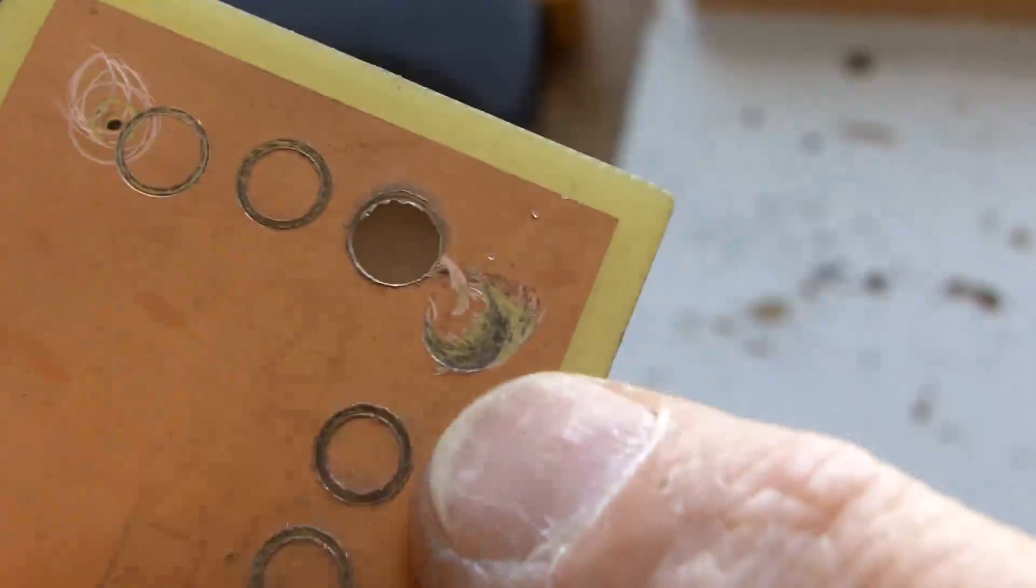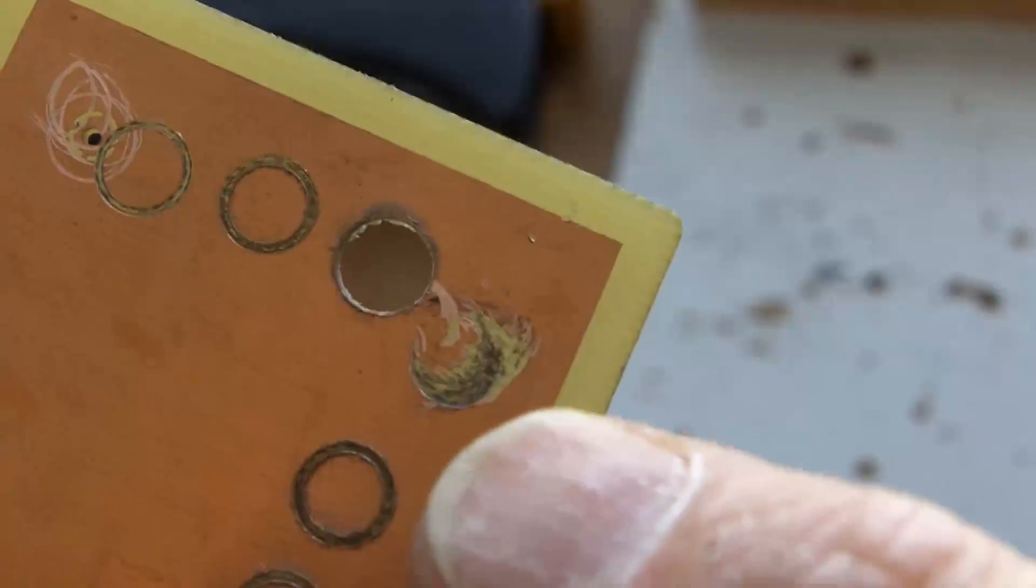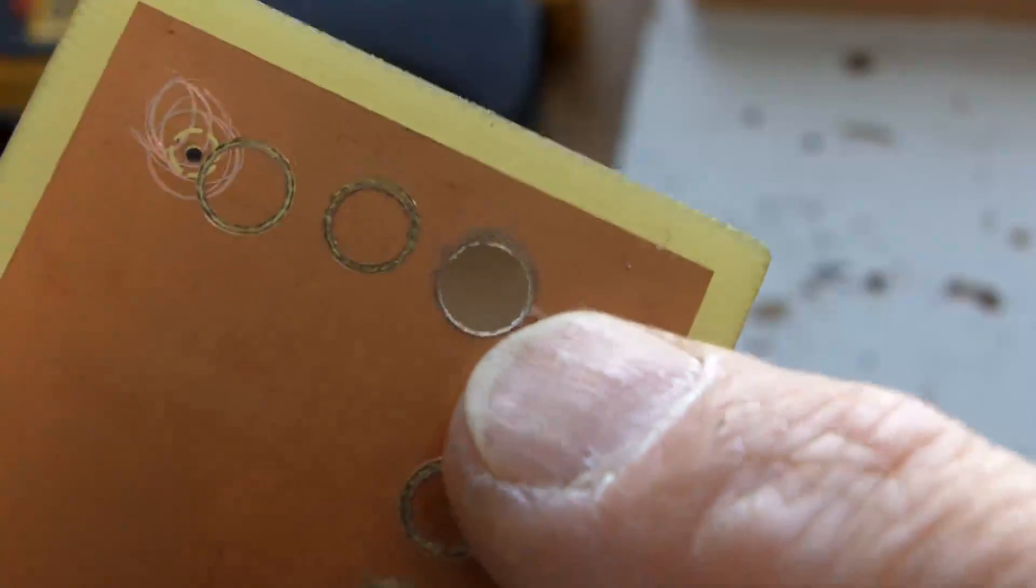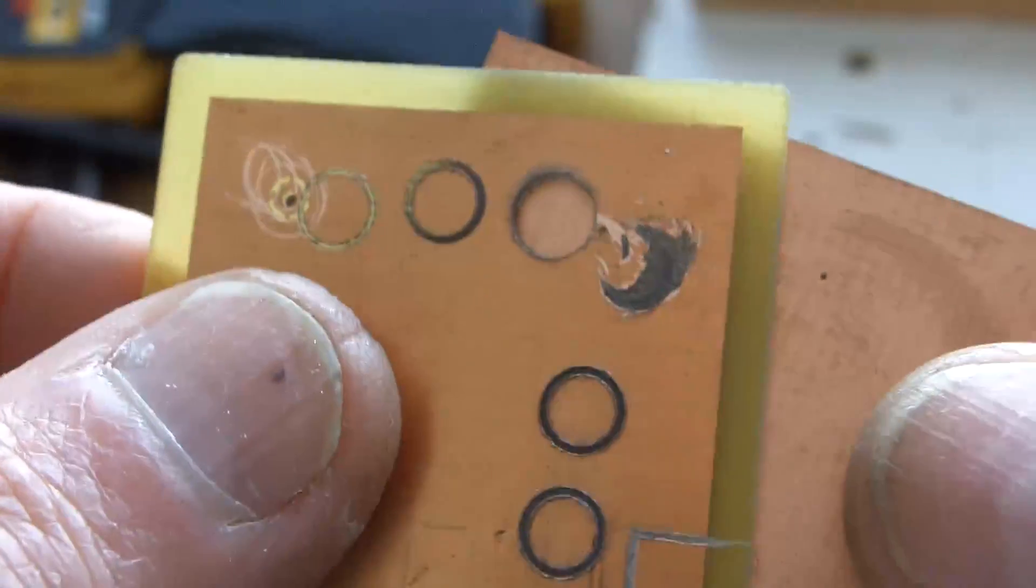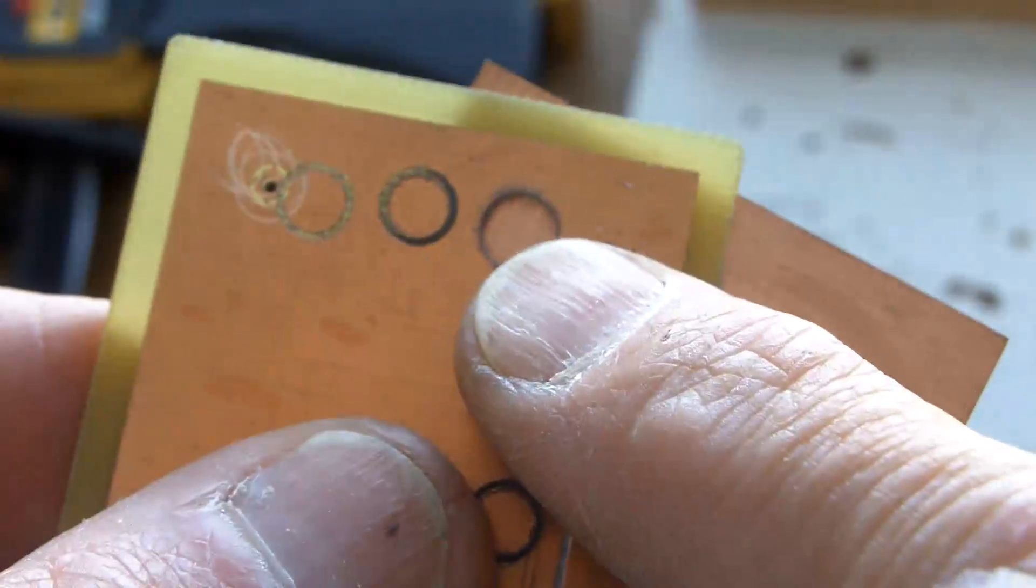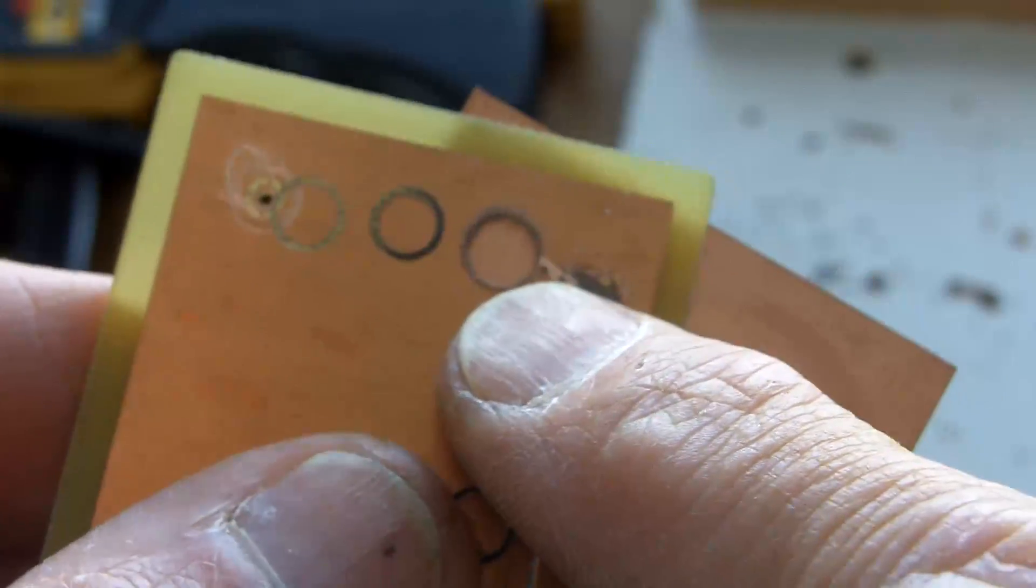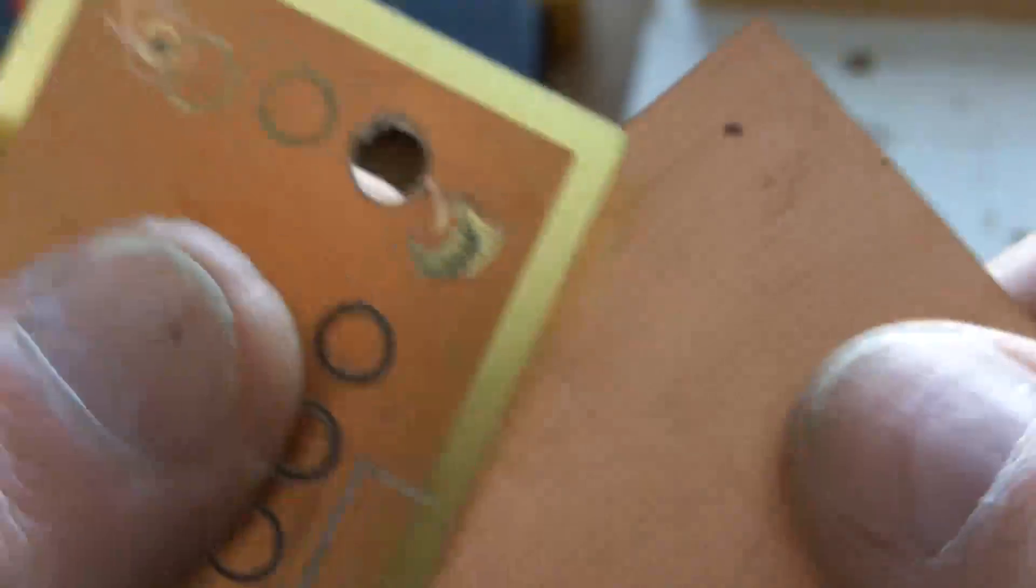But what I've done is I've drilled all the way through and I've got another bit of board here. What I'm going to do is sandwich those two together and I'm going to use that hole which I cut deliberately as a guide to get me into the next layer. That's a double-sided board.